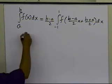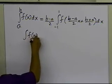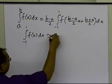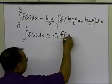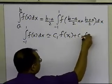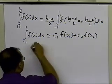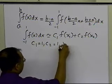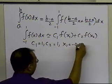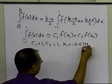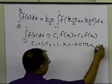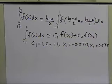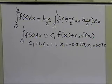This is how you are able to convert any definite integral with finite limits of integration to an integral going from minus 1 to plus 1. We also know that the integral from minus 1 to plus 1 of f(x) dx is approximated by the two-point Gaussian quadrature rule by this formula, where c1 is 1, c2 is 1, x1 is minus 0.5773, and x2 is plus 0.5773.